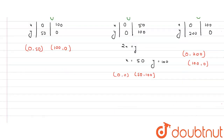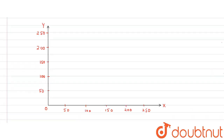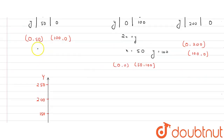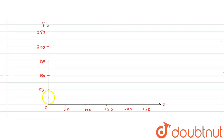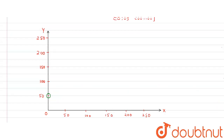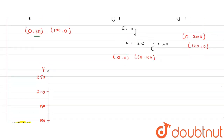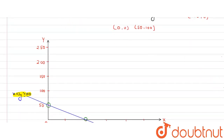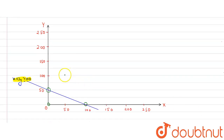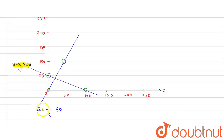Now let's plot these on a graph with x-axis and y-axis. For Equation 1, plot (0, 50) on the y-axis and (100, 0) on the x-axis, and join them — this represents x + 2y ≥ 100. For Equation 2, plot the origin (0, 0) and (50, 100) and join them — this represents 2x − y ≤ 0.